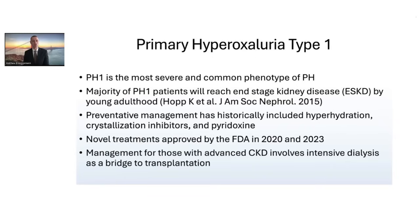Management for those with advanced kidney disease — defined here as an eGFR of less than 30 to 40 milliliters per minute — involves intensive dialysis, often six days a week of hemodialysis, used as a bridge to transplantation. Dialysis is started at such early stages to avoid oxalosis, that devastating condition where calcium oxalate can deposit in other tissues including bone, heart, eyes, and other tissues.